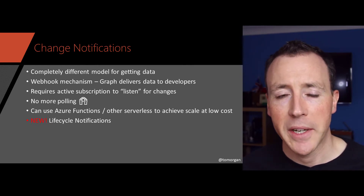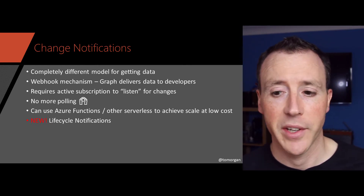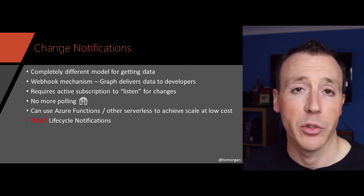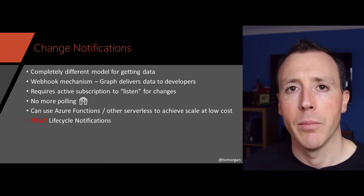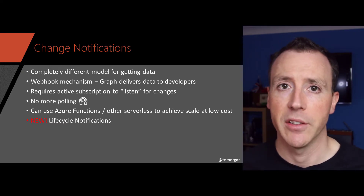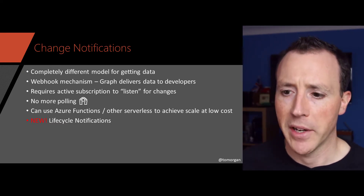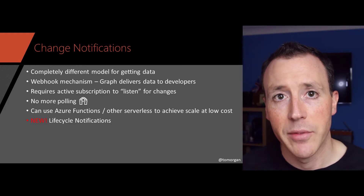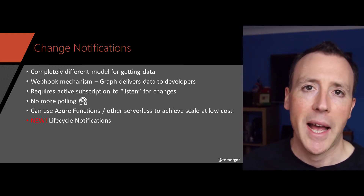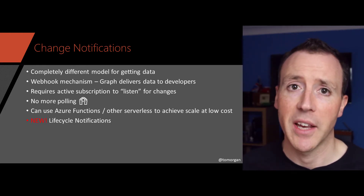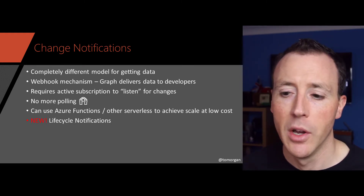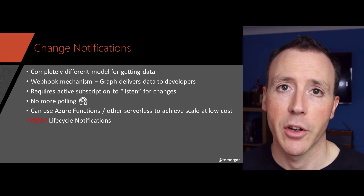Completely separate to this is a different way of accessing data in Graph: change notifications. If you're familiar with the webhook model, that's what this is. Rather than you pulling data from Graph, you can subscribe to data in Graph — this is the webhook mechanism where Graph delivers data to developers. So there's no more polling. And it also means that when you're putting together your design, you can use things like Azure Functions and other serverless architectures to achieve really good scale at really low cost.